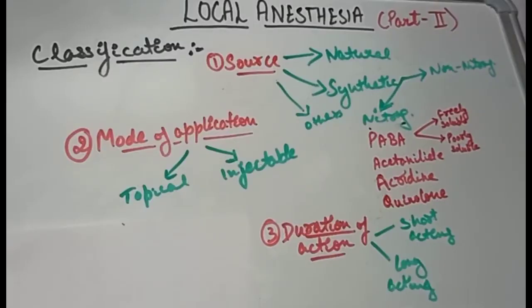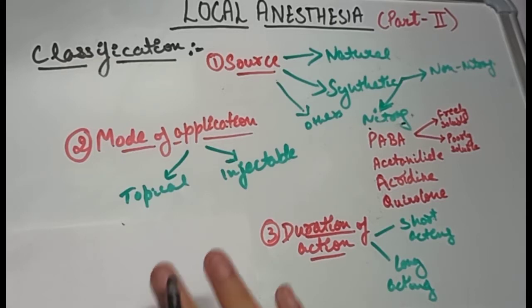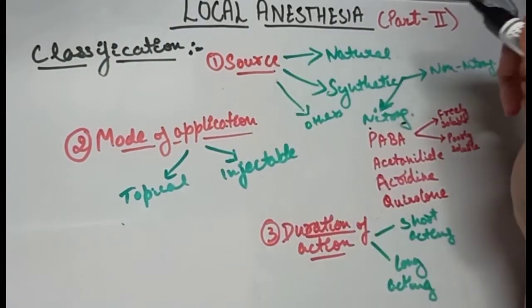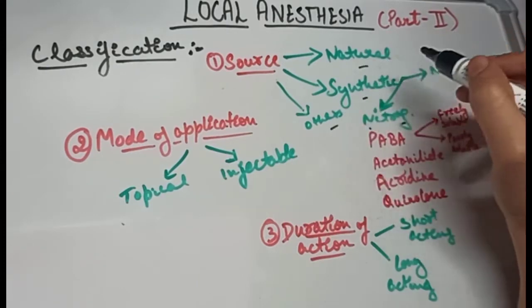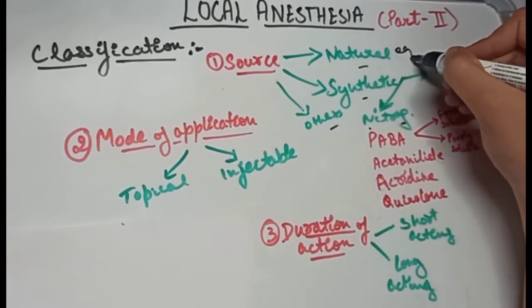Now let's see the classification of local anesthesia. Local anesthesia can be classified on the basis of the source: natural, synthetic, or others. Natural example is cocaine.